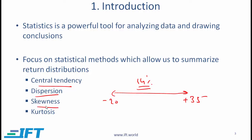Skewness talks about whether the data is skewed to the right, skewed to the left, or whether it is normal, which means that there is no skewness on either side. Kurtosis is a slightly more difficult concept that we will talk about towards the end of this reading.